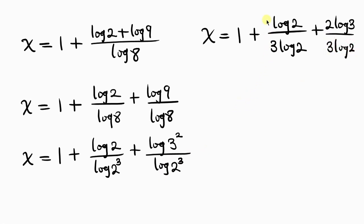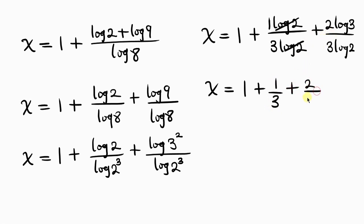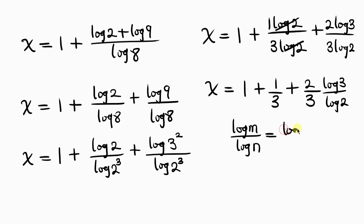Notice there is an invisible one here, and log 2 can cancel out log 2, so that we have x equal to 1 plus 1 over 3, plus 2 log 3 over 3 log 2. And from the law of logarithm, log m over log n is the same as log base n of m, so we're going to write this in that format.